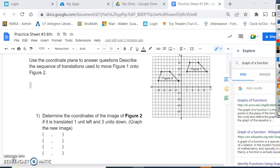Hey everyone, we are going to work on practice sheet number three. So first what I want to do is look at this first one. This one is actually worth four problems. So it says we're going to use the coordinate plane to answer the question, describe the sequence of the translation used to move figure one onto figure two.